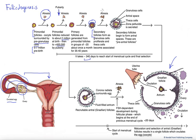We undergo some further atresia and end up with more developed secondary follicles. These are called antral secondary follicles — they actually have a fluid-filled space. As you can see, the egg is beginning to become isolated within this fluid-filled space. And we end up with recruitable antral secondary follicles.